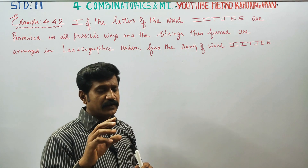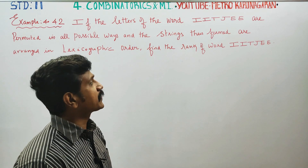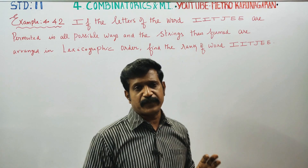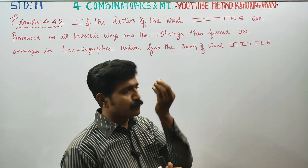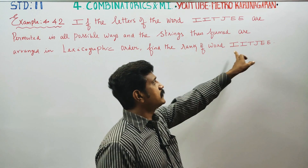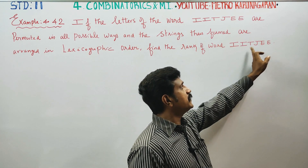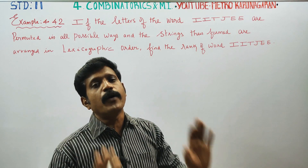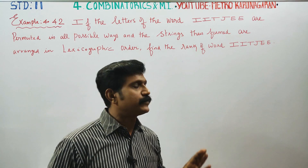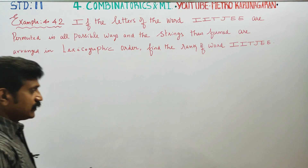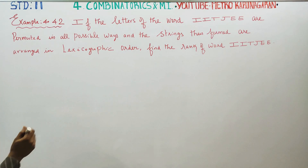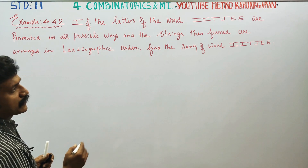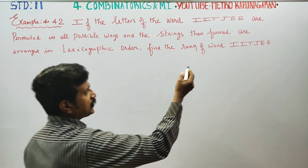IITJEE — we can use a word frame like a general dictionary. This is a small dictionary. The alphabetical order we will follow starts with A, B, C, D, E.